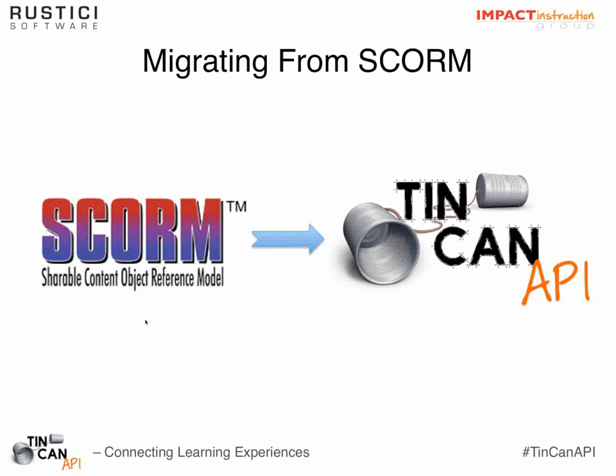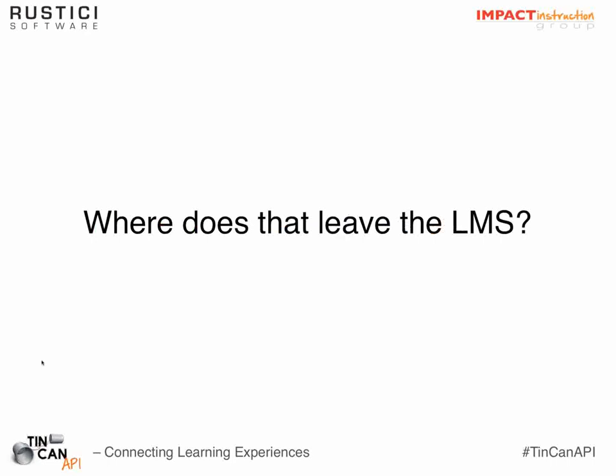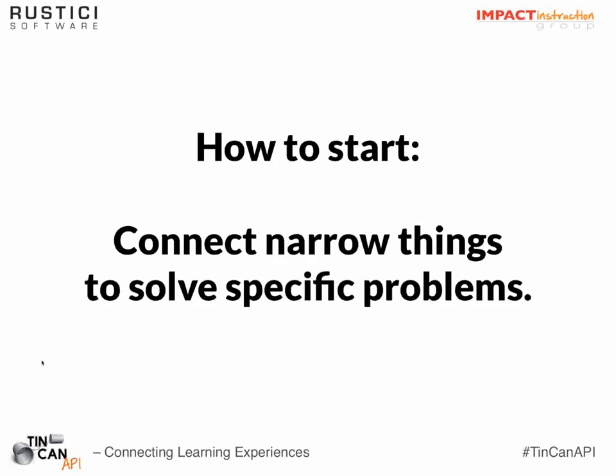There is also a direct migration path from SCORM to Tin Can — it's very straightforward. There are tools that play SCORM content and translate it all to Tin Can. ADL is also producing a SCORM-to-Tin Can migration document. As for the LMS versus LRS question — is the LMS dead? I don't think so. LMSs serve a big purpose in organizations and do many things learning record stores aren't going to do. I see these things evolving in parallel, with different organizations using things in different ways.